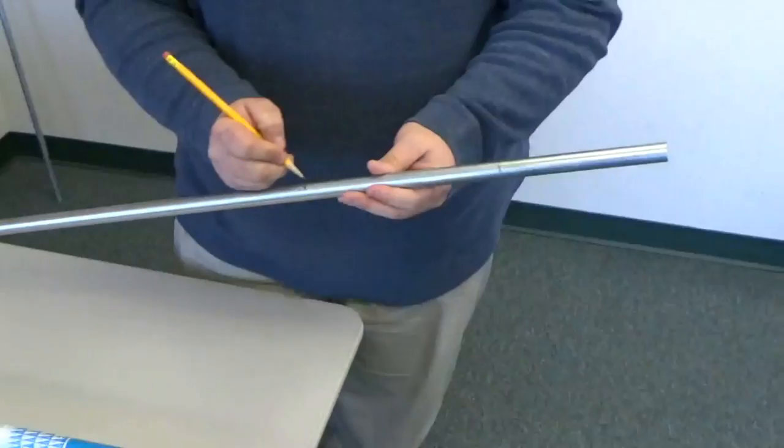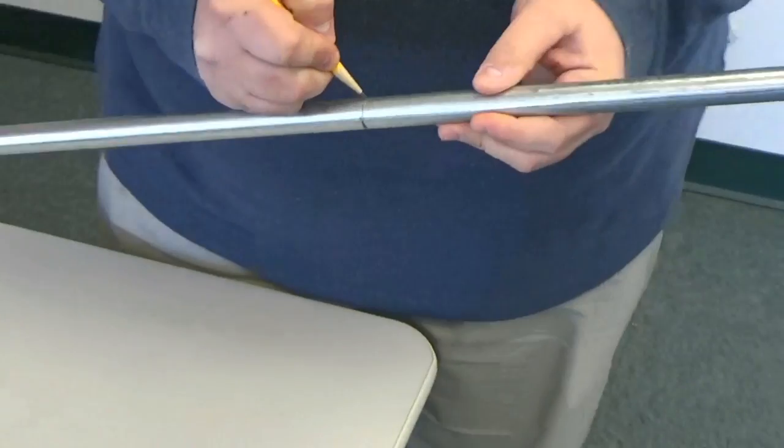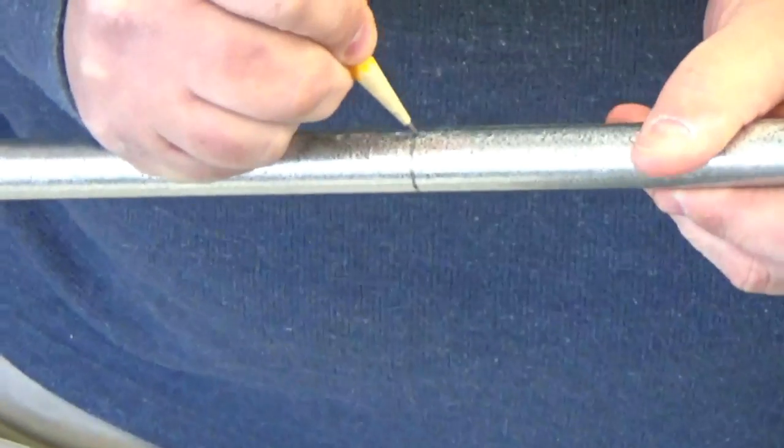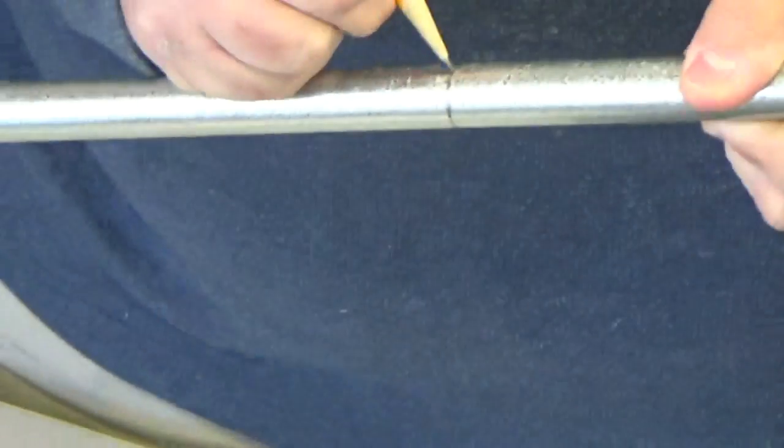The key to this is to make sure you make your mark all the way around the conduit so that we can slide it into our bender.